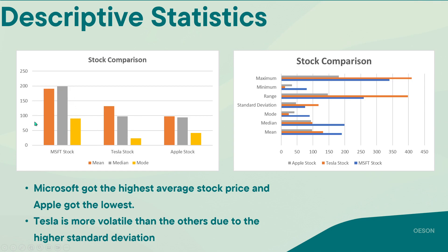You can see that Microsoft had a very high average stock price compared to the other two. You can also see here that the range of Tesla's stock is really high, so Tesla is likely to have a very fluctuated stock performance.